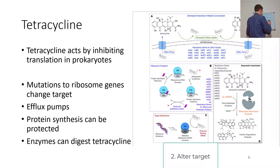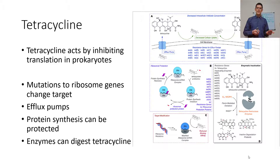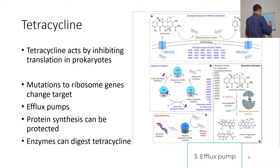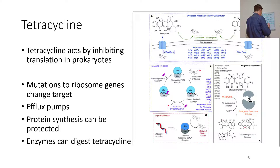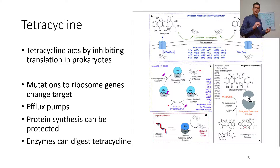How do bacteria evolve resistance to tetracycline? They can alter the target — changes in ribosomal RNA change the ribosomes, making them less effective at taking up tetracycline. There are efflux pumps that expel tetracycline and similar compounds. Other proteins can protect protein synthesis by stabilizing the ribosomal complex so it's unaffected by tetracycline. And just like beta-lactamase, there are enzymes that can digest tetracycline.